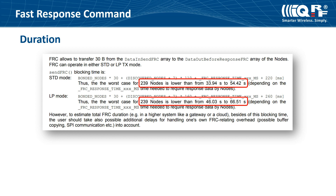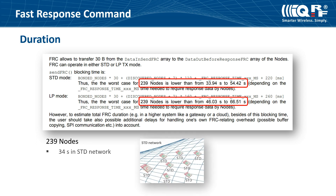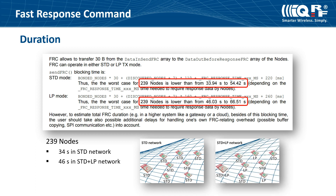The FRC duration depends on the number of bonded nodes, the number of discovered nodes, and the time needed to serve the command on the node's side. It of course depends on the network type. Find details in the documentation. For example, the FRC duration in a full network with 239 bonded and discovered nodes and 40 ms default FRC response time is 34 seconds in STD network type and 46 seconds in STD plus LP network type.